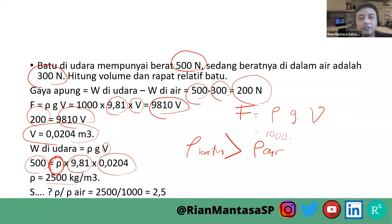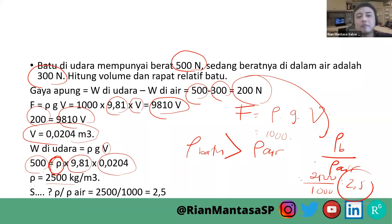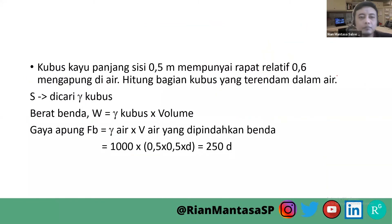Rapat relatif adalah masa jenis suatu benda dibagi masa jenis air. Hasilnya adalah 2500 dibagi dengan 1000, hasilnya 2,5. Biasanya seperti itu untuk menganalisis suatu fenomena terkait melayang, terapung, atau tenggelamnya suatu benda. Jadi biasanya kita menganalisis terkait berat, volume, kemudian masa jenis, kemudian rapat relatif, dan seterusnya.